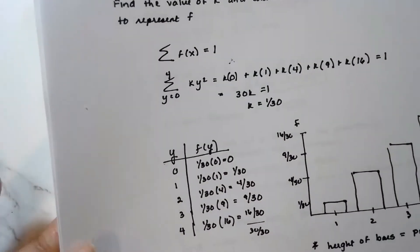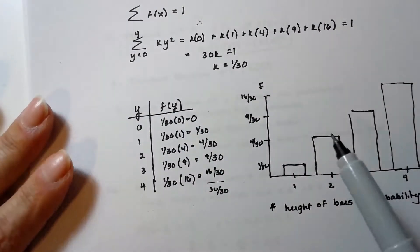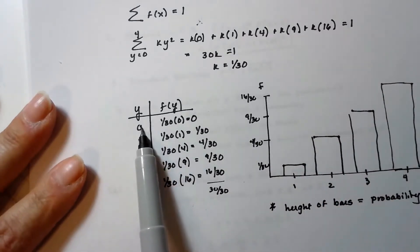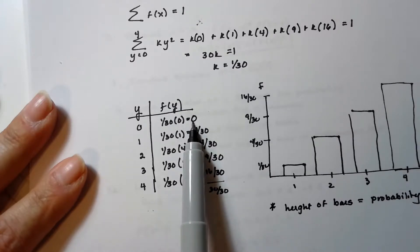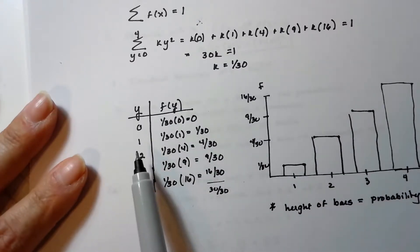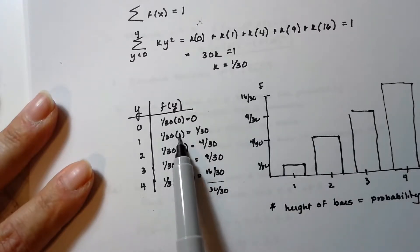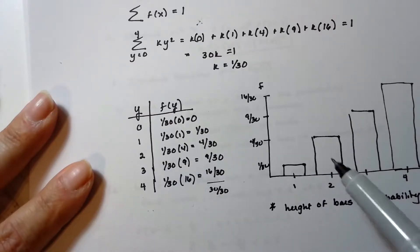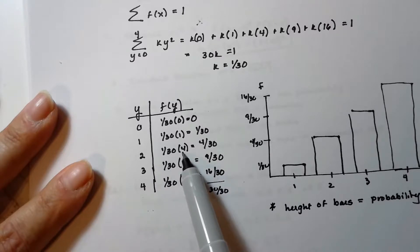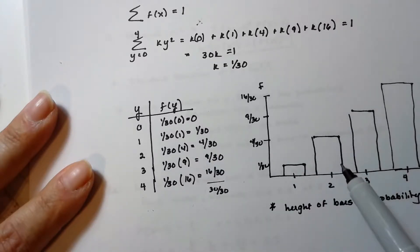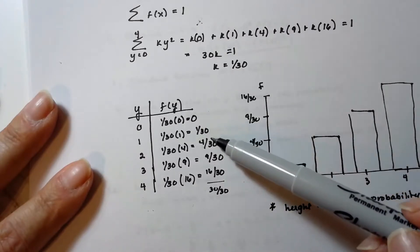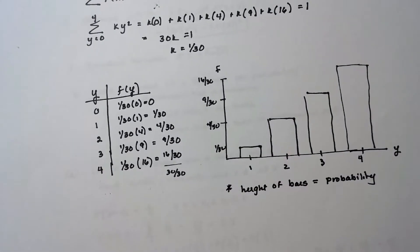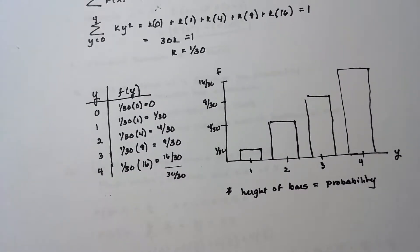Now find the probabilities to build the bar chart — the heights of the bars equal the probabilities. When y=0: (1/30)(0²) = 0, so the height at zero is zero. At y=1: k(1²) = 1/30. At y=2: k(2²) = 4/30. And so forth. If you add up all of these probabilities you get 100%, so all outcomes are accounted for. There you have it — a simple probability distribution for discrete random variables.